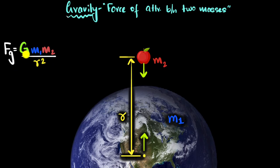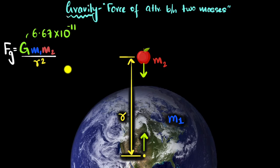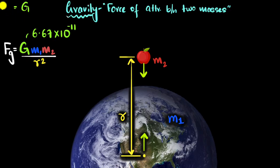Now what is G? G is a constant — a universal constant. Its value was found experimentally to be about 6.67 times 10 to the power negative 11. But what are its units? You just have to rearrange this equation to figure that out. So we isolate G on one side and get force times r squared divided by m1 times m2. So the unit of G should be Newton times meters squared divided by kilograms squared.